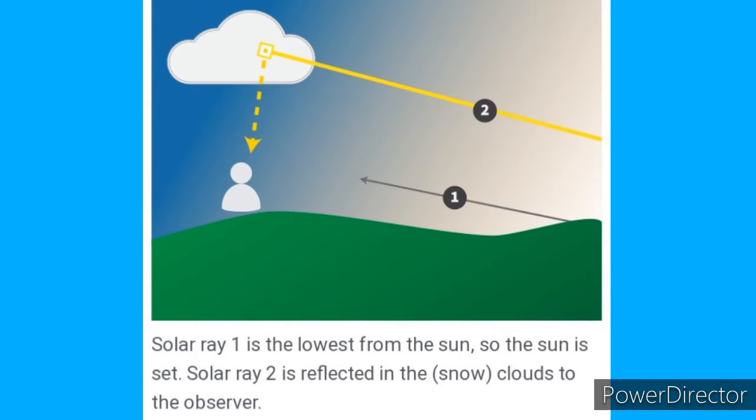But what do we mean when we say the sun is below the horizon? In this picture, the person who will be seeing the sun from the first solar ray will see that it is set. But the person who will see the sun through the second solar ray, as it is reflected from the cloud, will see that the sun is just below the horizon.